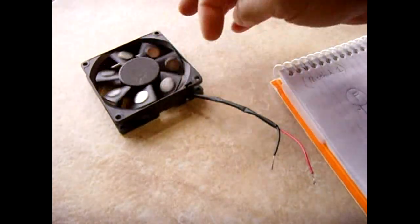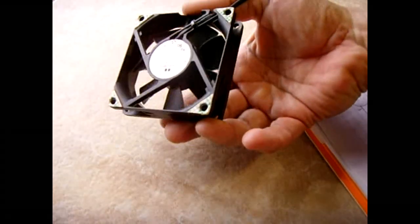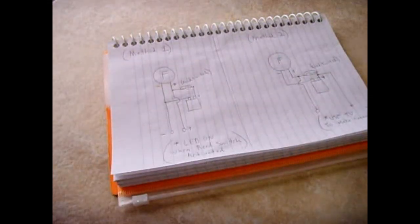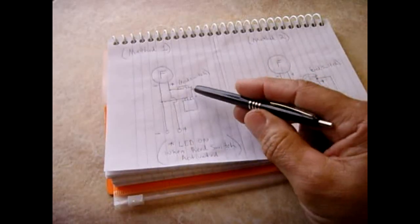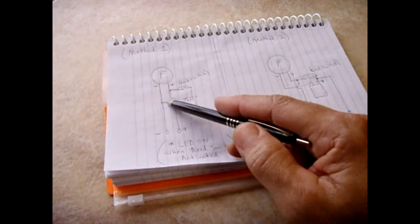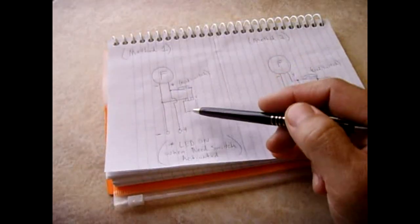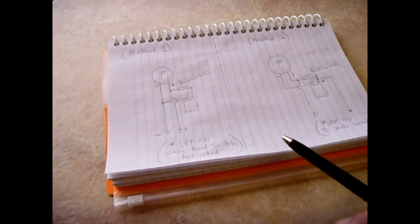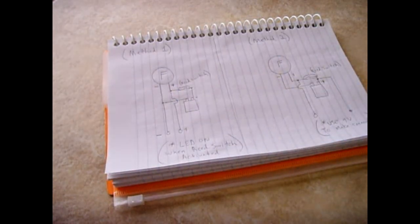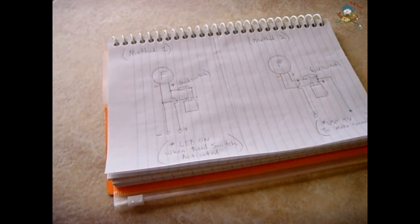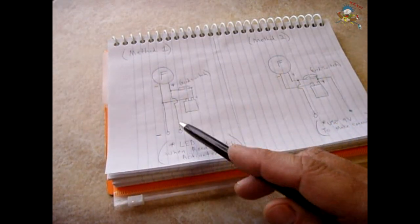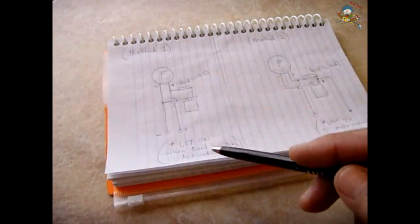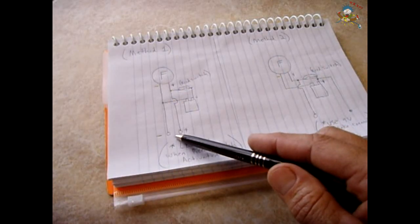Now the other way it could be done, if you're not going to do it this way where the switch closes and allows power to the fan and the LED to light, which is the way mine is set up. The other way that he showed, notice he didn't show both in the same video. One video shows the fan, he doesn't put a battery across here, he only spins it with the magnet and then shows the LED lighting. In another video he shows you this setup, you get a 9 volt battery, touch it across here and the fan starts spinning.